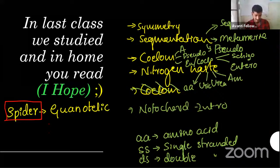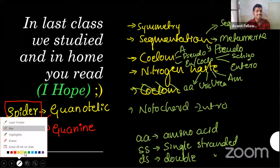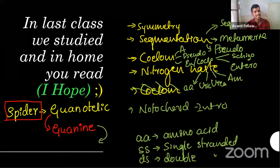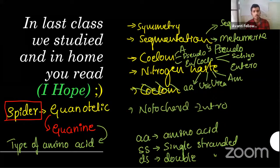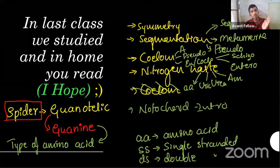Have you heard of 'guanine'? In simple words, it is a type of amino acid — you will learn a little bit about it in the biomolecules chapter. So gonothelic means it excretes guanine. Guanine is a kind of amino acid, so broadly it falls under ammonotelic. But these organisms specifically secrete guanine, mainly because of their diet.